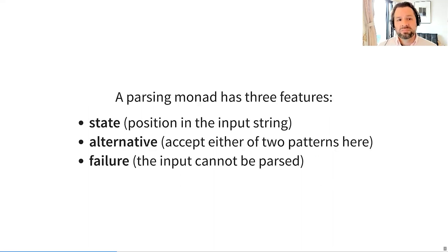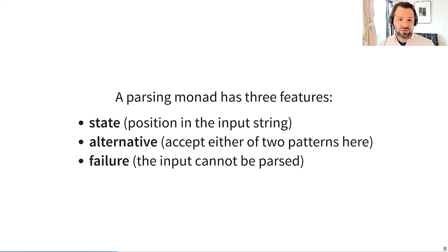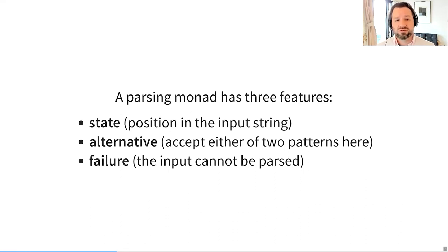A parsing monad is a monad with three features: it knows its position in the input string; it can choose alternate parsing branches based on the contents of the input string; and it can fail in the case that the input string is illegal and cannot be parsed. There are many implementations of monadic parser combinators in many languages and all of them have these features. These three features are necessary and sufficient for a parsing monad — any monad which has them is a parsing monad.